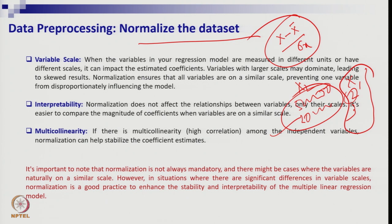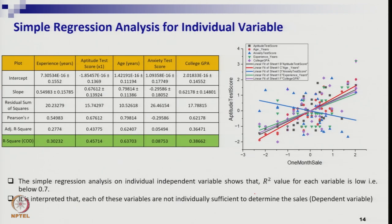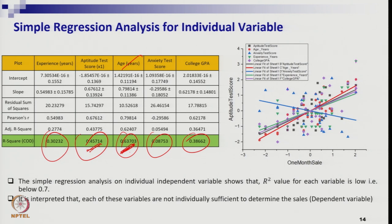Normalization also helps manage multicollinearity to some extent and improves interpretability. I've done the normalization for all data columns and you can see it in Excel. Running individual regressions for each variable: only age and aptitude test score have decent R-square values — around 63% and 45% respectively. The rest have poor individual R-square, confirming they are weak predictors.